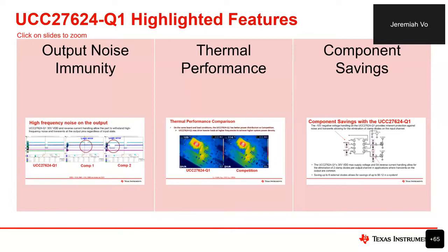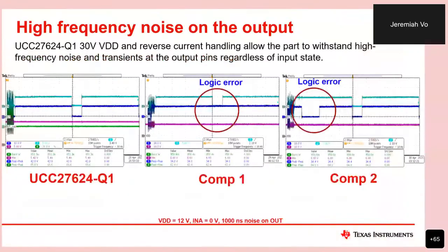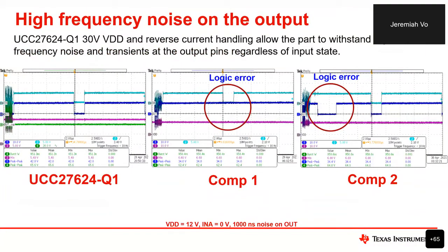Next, I'd like to speak about some highlighted features to promote understanding of why we designed these into the UCC 27624Q1. The first is output noise immunity. Here on the left, we can see the UCC 27624Q1 and two competitive parts — Comp1 in the middle and Comp2 on the right. There is a lot of noise at the beginning of each test, meant to see what can survive high-frequency noise. The UCC 27624Q1 survives this high-frequency noise, whereas Comp1 misses the signal and Comp2 produces a false signal. This is due to the high robustness, 30V VDD, and reverse current handling, which allows the part to handle high-frequency noise and transients at the output pins regardless of noise on the input.